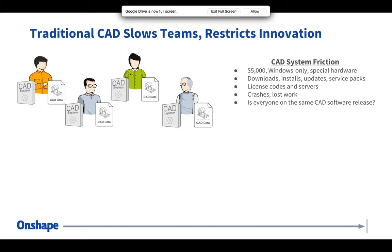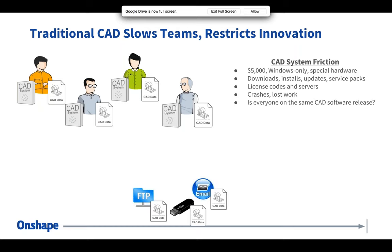The file-based infrastructure means users have to distribute files with flash drives, with email, with FTPs, even with dedicated file servers with VPN access rights and all these things to manage every year with updates — all just to share a file.